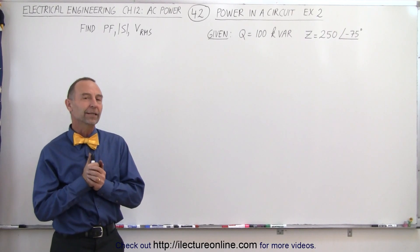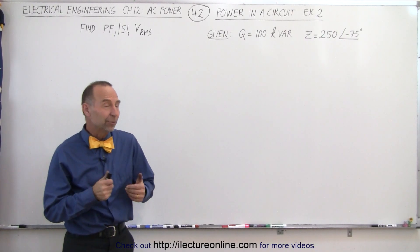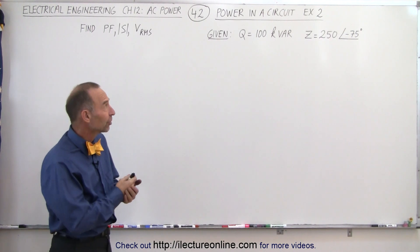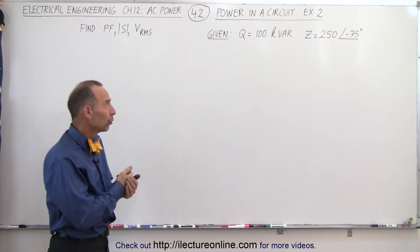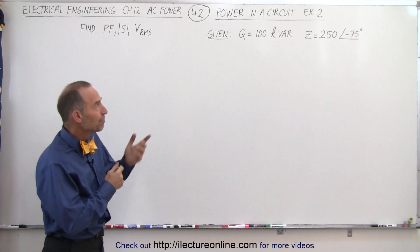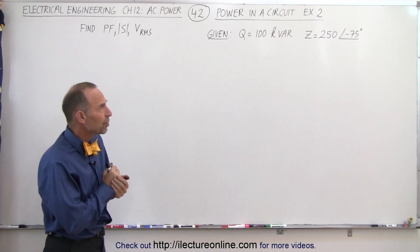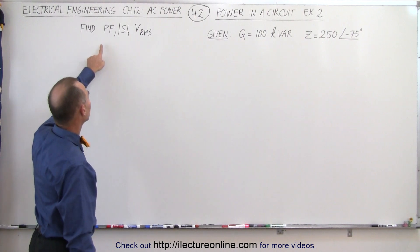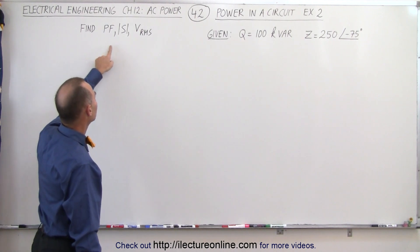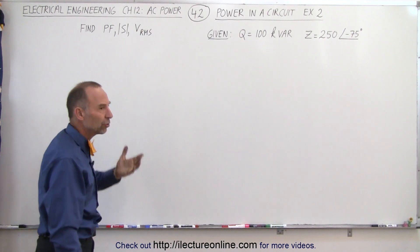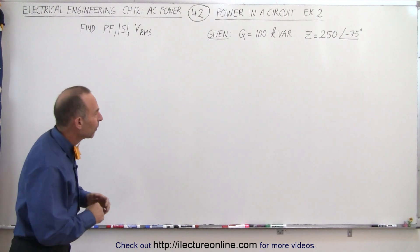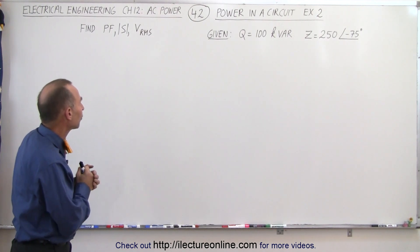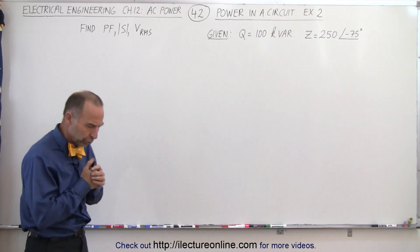Welcome to our lecture online. Sometimes we're given very little. We're given that the reactive power is 100 kilo VAR and the impedance has a magnitude of 250 ohms with a phase angle of minus 75 degrees. They're asking us for the power factor, the magnitude of the complex power — which would be the apparent power — and they're also asking for the RMS voltage.